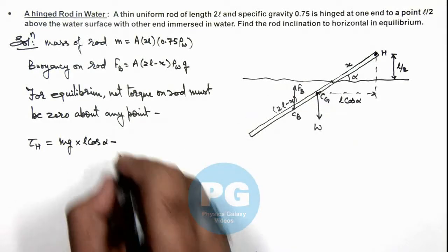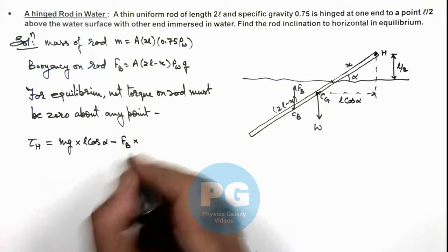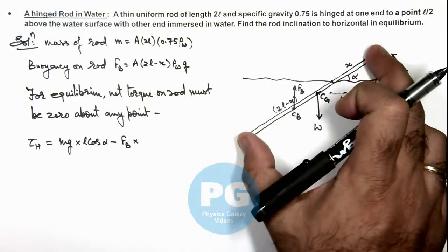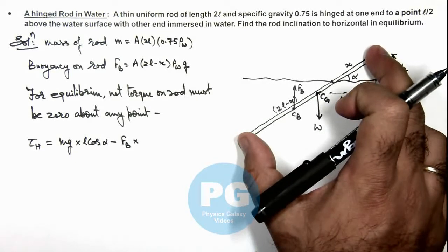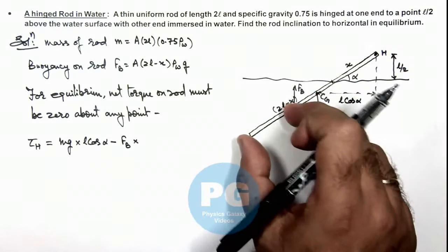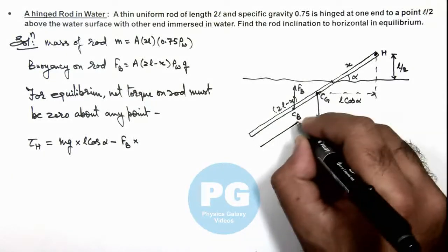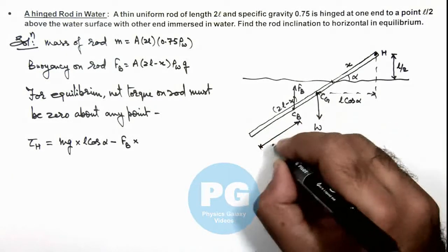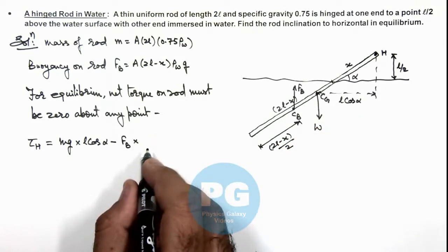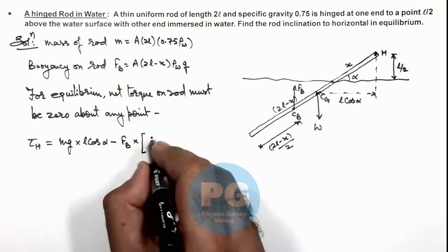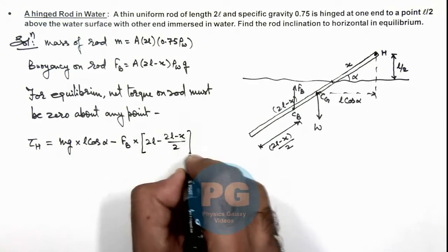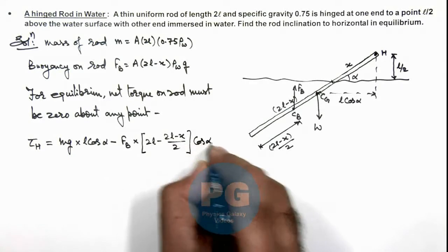Minus the torque due to the buoyancy force which is F_B multiplied by this distance about the hinge, which can be given as (2l minus x)/2, because this distance is (2l minus x)/2. So this helps us in calculating the torque. This is force of buoyancy multiplied by (2l minus x)/2 times cos α. This should be zero.